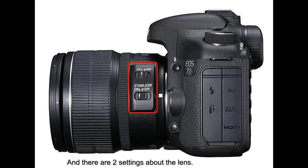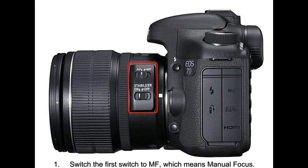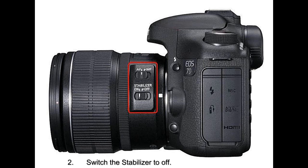There are two settings about the lens. First, switch the first switch to MF, which means manual focus. Second, switch the stabilizer to OFF.